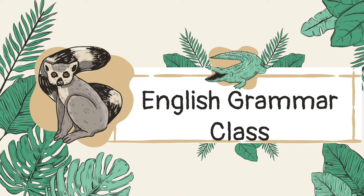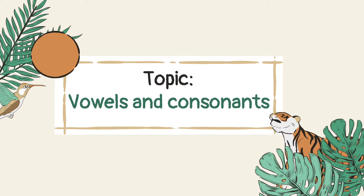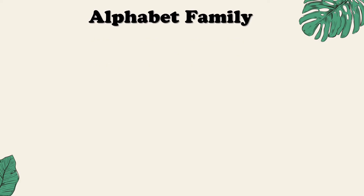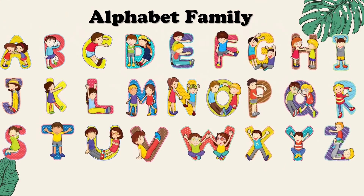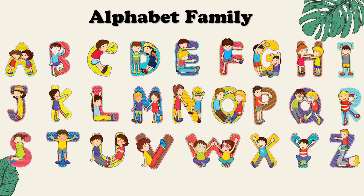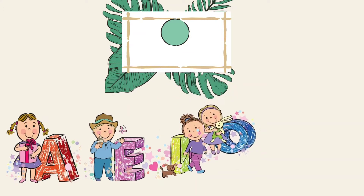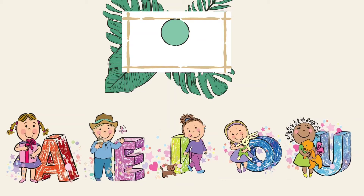Welcome to my English grammar class. Topic: vowels and consonants. The English alphabet family consists of 26 letters. There are five special letters in the English alphabet family: the letters A, E, I, O, U. These are called vowels. There are five vowels in the English alphabet family.